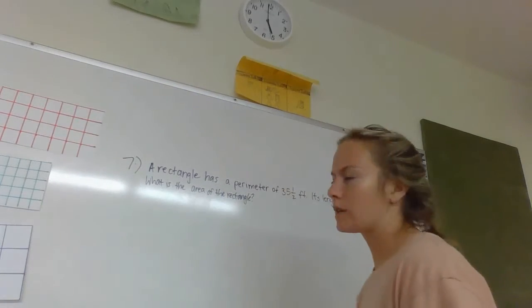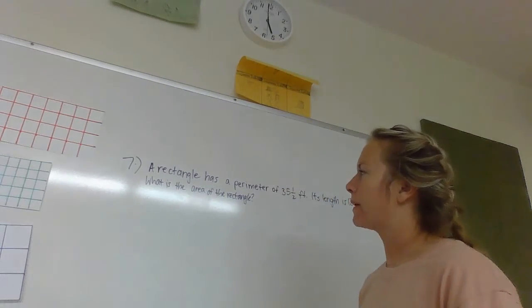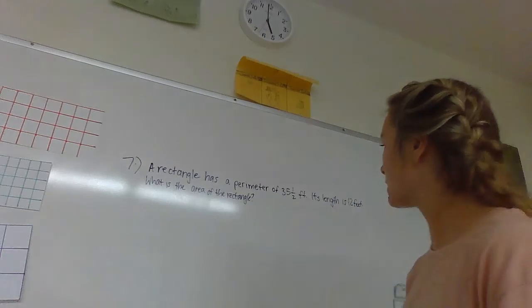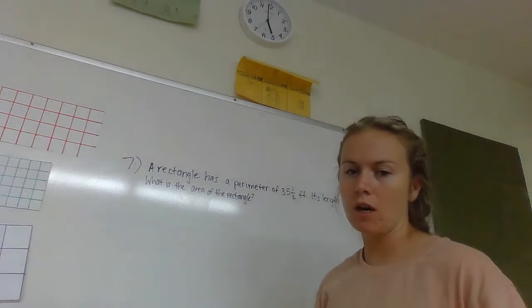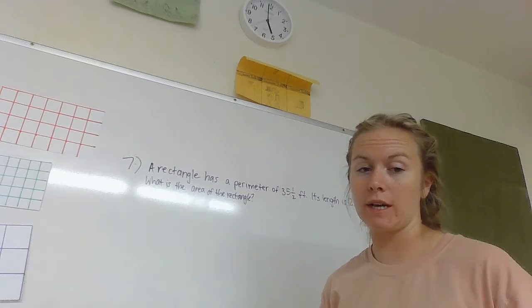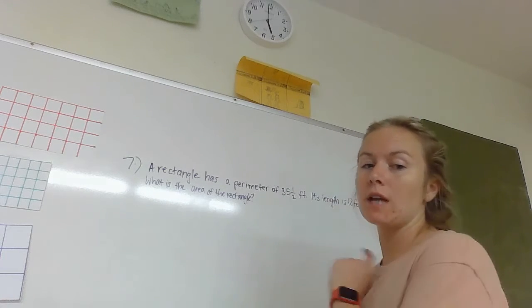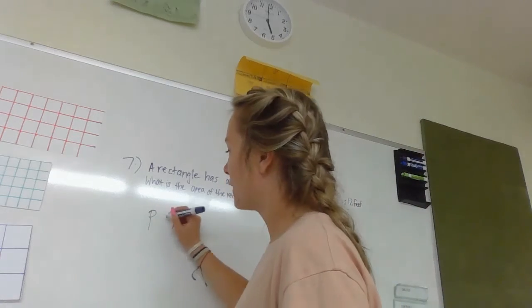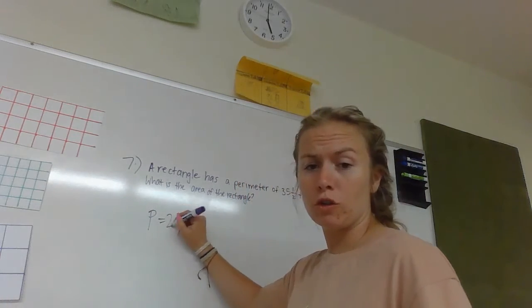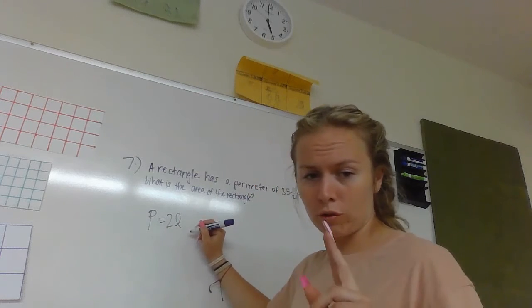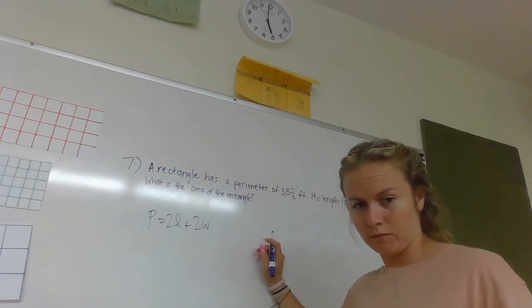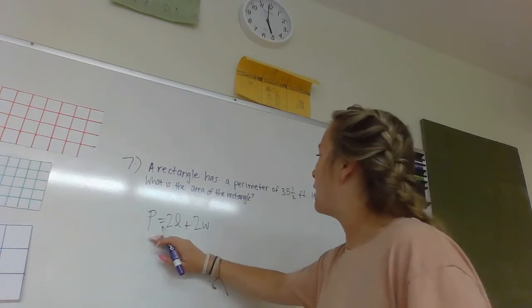Okay, so here's our second problem. A rectangle has a perimeter of 35 and a half feet. Its length is 12 feet. What is the area of the rectangle? Now to be able to figure this out we need to know and remember that perimeter is P equals 2L, so two lengths plus two widths.